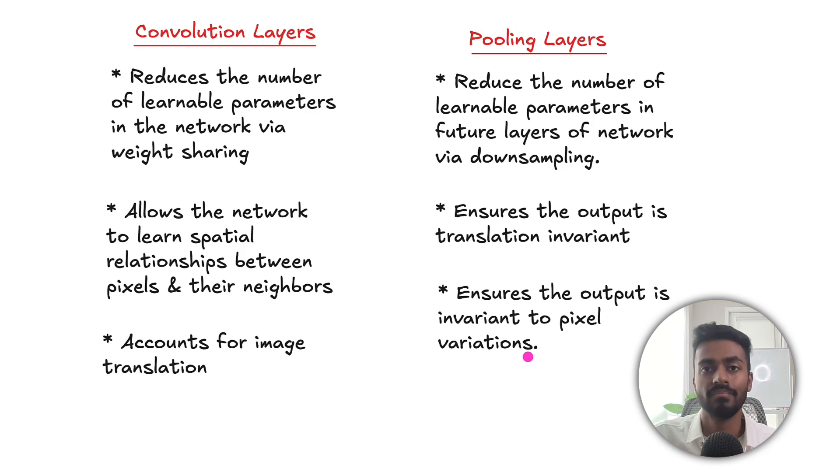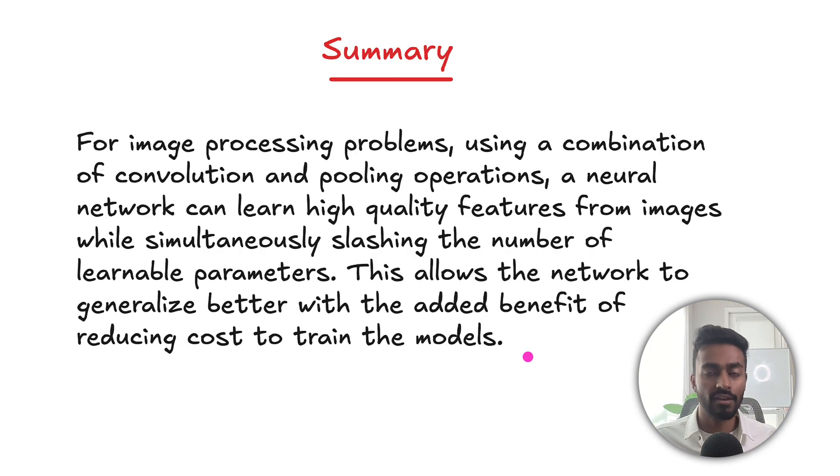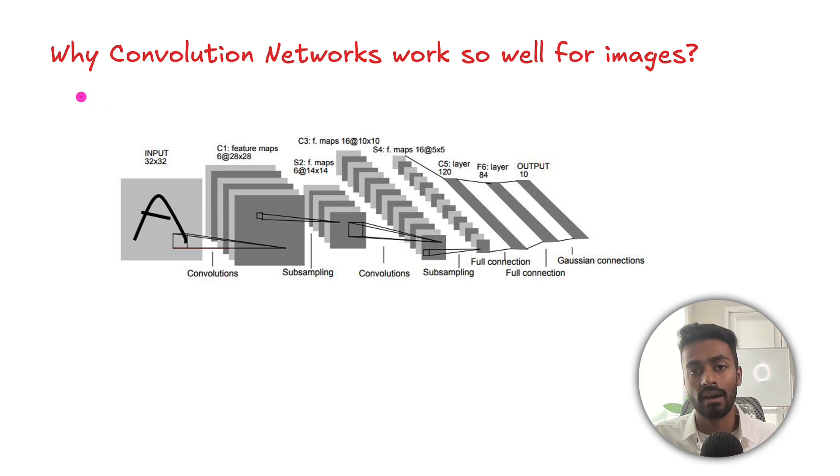So if I were to summarize overall this video, for image processing problems using a combination of convolution and pooling operations, a neural network can learn high quality features from images while simultaneously slashing the number of learnable parameters. This allows the network to generalize better with the added benefit of reducing the cost to train models. And I hope at least at a high level, this now answers the broad question of why convolution networks work so well for images.